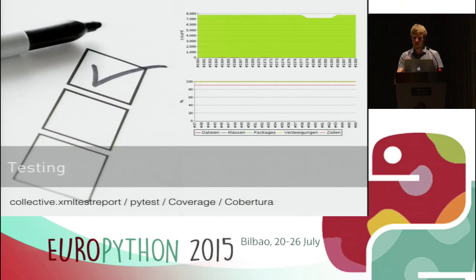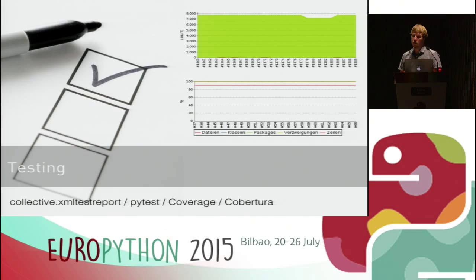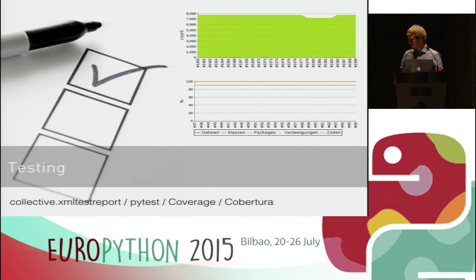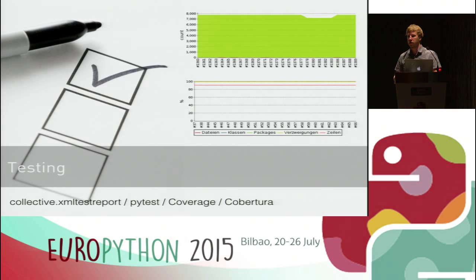If you do your build automatically, you of course want to run your tests to make sure your software actually works. If you use PyTest, you can configure it to output files that Jenkins can read out of the box — Jenkins uses an XML interface. You can then present nice statistics about your failing or passing tests. The same is true for test coverage: use the coverage package and the Jenkins Cobertura plugin to show coverage to your project manager so they can track performance.